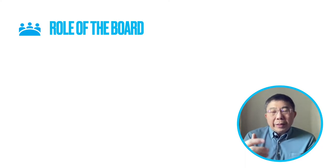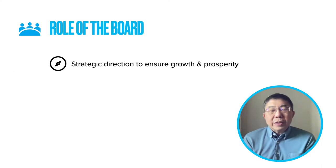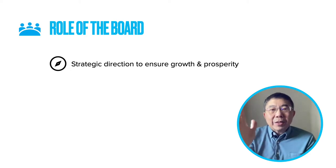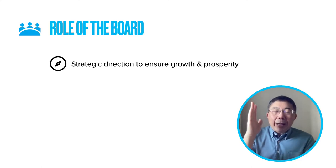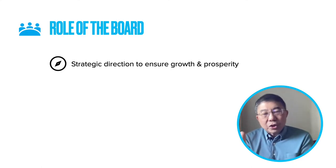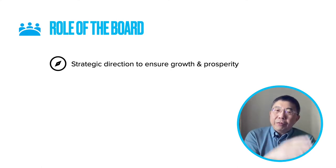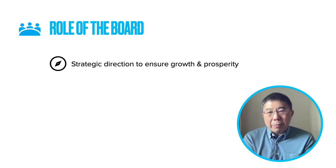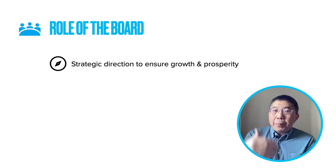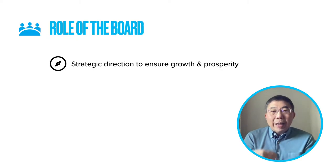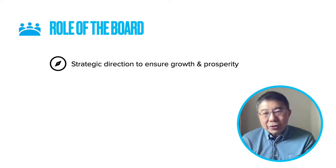The board plays three important functions. The first is to set the right direction for the company, ensuring growth and prosperity not just for shareholders but for all stakeholders. As mentioned in a previous video about the Malaysian code, it is important that this direction — especially for Malaysian companies — takes into account environmental, social and governance issues as well.